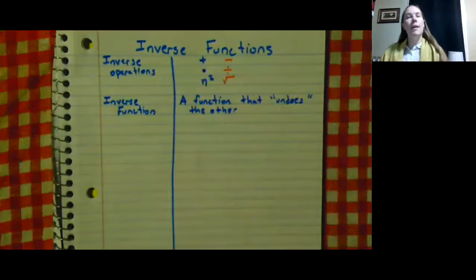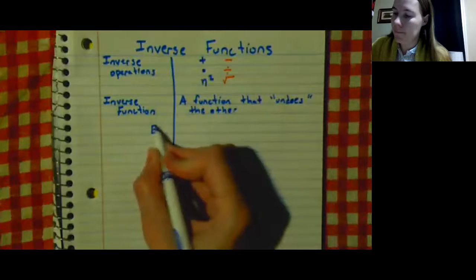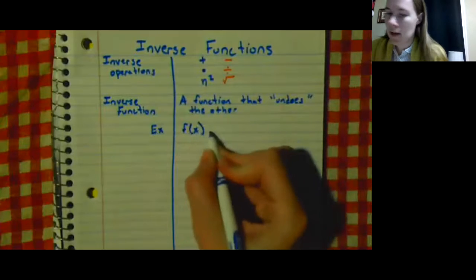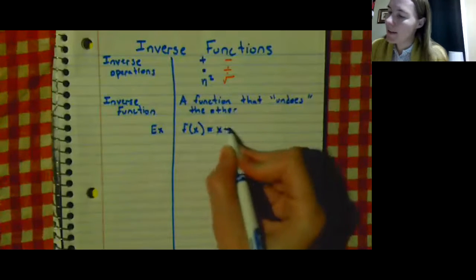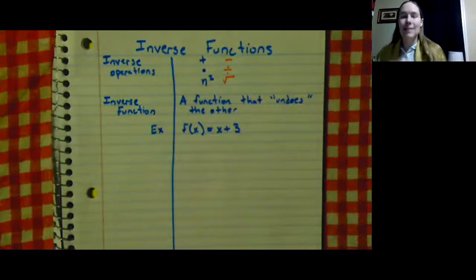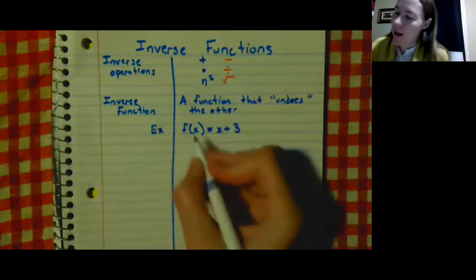So for example, what I mean by undoes is, say we have f(x) = x + 3. We want a function that undoes that, which is the opposite.